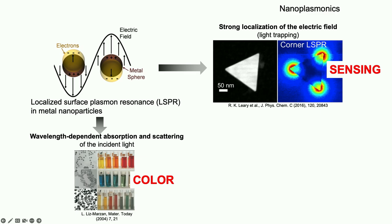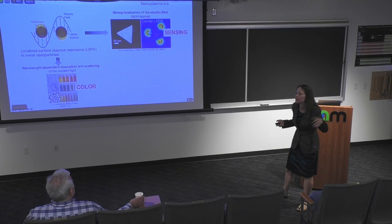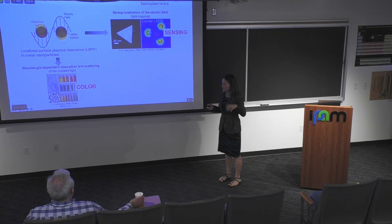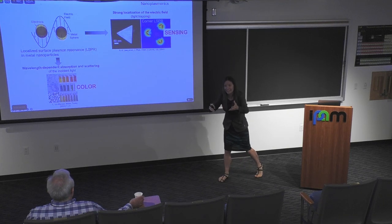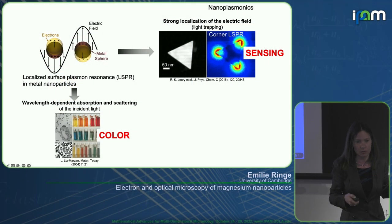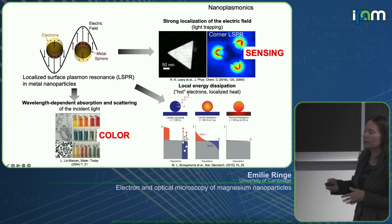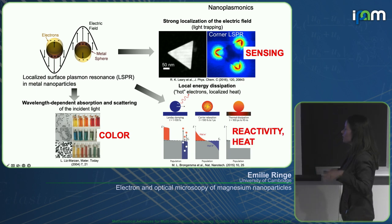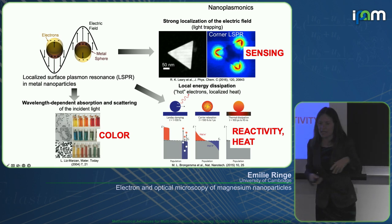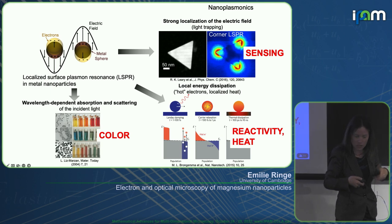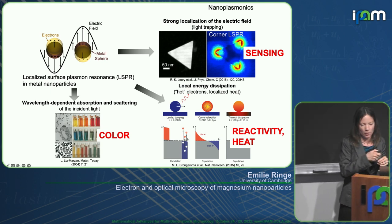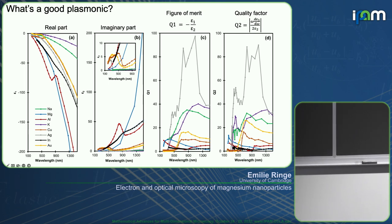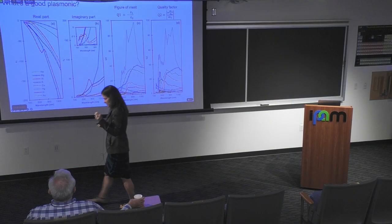LSPR also leads to enhancement of the electric field at the surface of the particles as the electrons slosh around, which leads to surface-enhanced sensing, like surface-enhanced Raman spectroscopies. More recently, people have become really interested in the fact that once you excite this resonance, it decays — either by creating heat or creating non-thermally equilibrated electrons. You can either kill cancer cells or drive chemical reactions, using these particles as antennae for light to localize that energy at their surface.